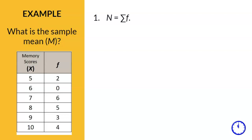So, step 1. We need to calculate N. But we will use the formula N equals the sum of F because we are using frequency tables from the previous chapter. You will add up the frequencies to get N, which equals 20.